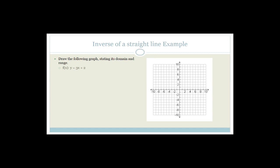It says draw the following graph stating its domain and range. You've got f of x where y is 3x plus 2. We know it goes through positive 2 — that's the y-intercept, which is 2. To find out where it cuts the x-axis, we're going to let y equal 0. So we go 0 equals 3x plus 2. Minus 2 equals 3x. So x equals minus 2 over 3, which is minus two-thirds. That's about over here, and we're really drawing a straight line like this.